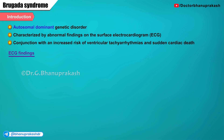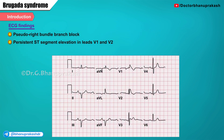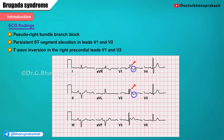Typically, the ECG findings consist of a pseudo right bundle branch block and persistent ST segment elevations in the leads V1 and V2, although isolated cases have been described with similar findings involving the inferior ECG leads. Here's an image of a 12-lead electrocardiogram from a patient with Brugada syndrome which demonstrates downsloping ST elevations as seen here in the chest leads V1 and V2. Also note that there is ST segment elevation along with a T wave inversion in the right precordial chest leads V1 and V2.